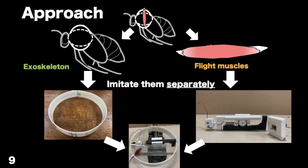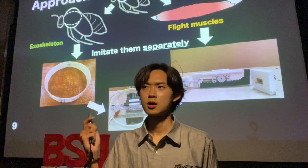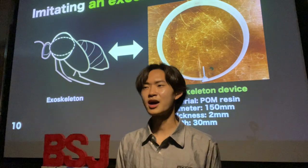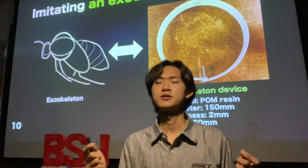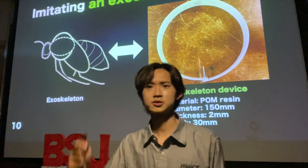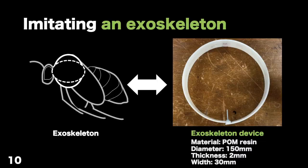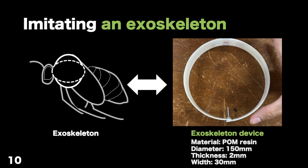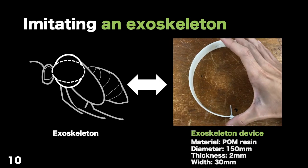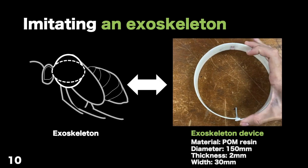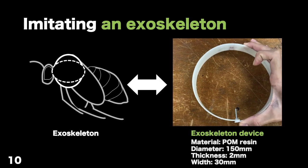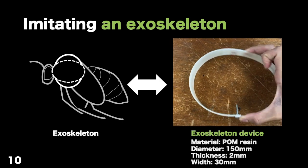As the same approach as before, we imitate them separately. Regarding the skeleton, we use a ring made of palm resin, because it can be seen as a mass-spring-damper system.